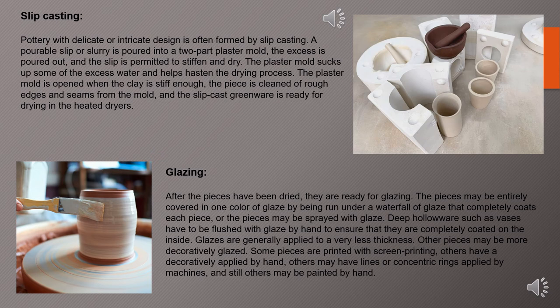After the pieces have been dried in heated dryers, they are ready for glazing. The pieces may be entirely covered with one color glaze by running them under a waterfall of glaze that completely coats each piece, or may be sprayed with glaze. Deep hollow ware such as vases has to be flushed with glaze by hand to ensure complete coating. Glazes are generally applied at very thin thickness. Some pieces are printed with screen printing, others have glaze decoratively applied by hand using many different colors, with lines and concentric rings to show intricate designs, and others may be painted by hand.